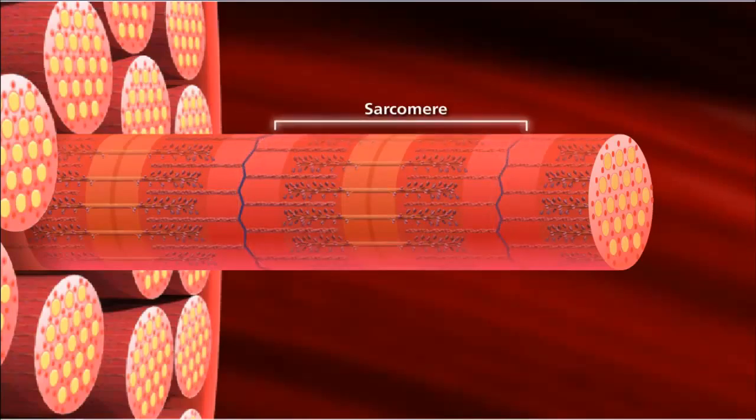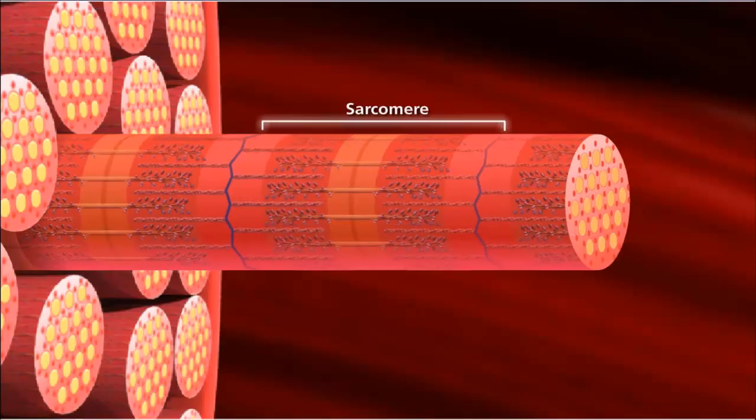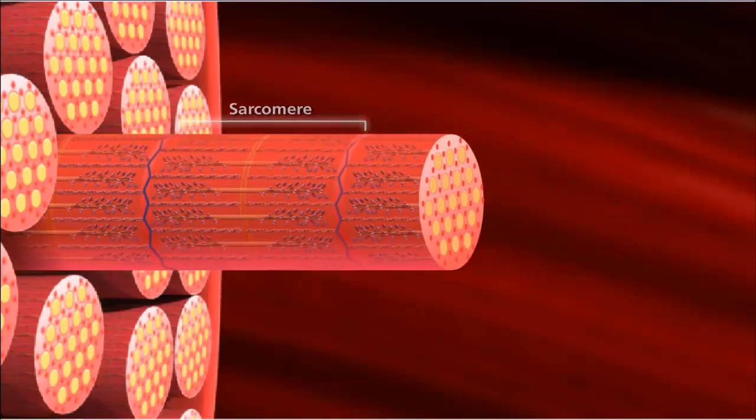Each sarcomere consists of alternating thick and thin protein filaments giving skeletal muscle its striated appearance. The muscle contracts when these filaments slide past each other.